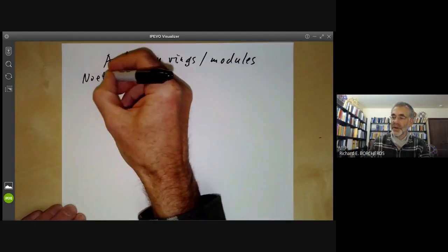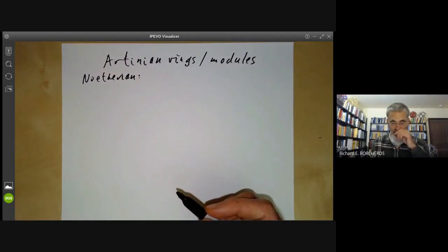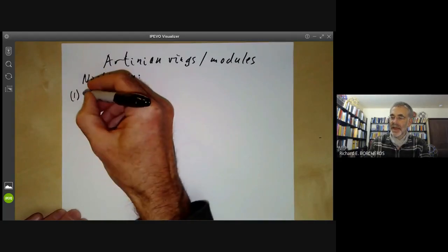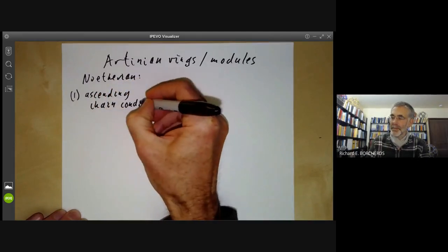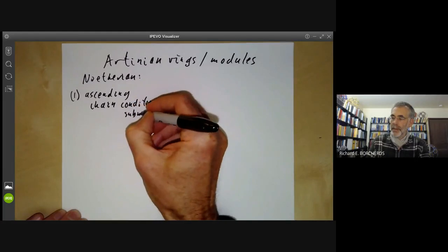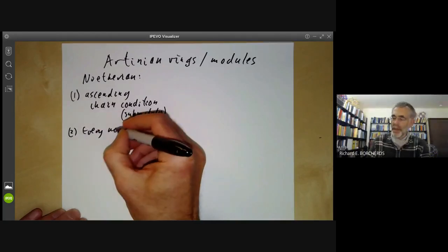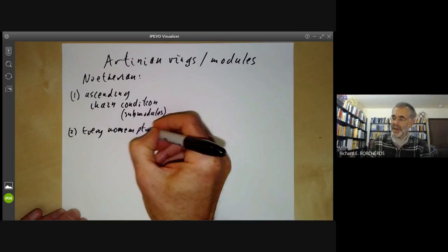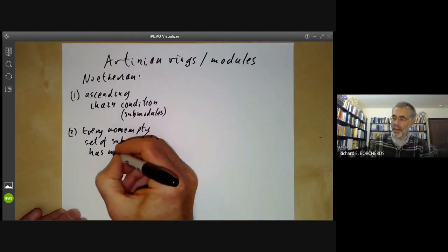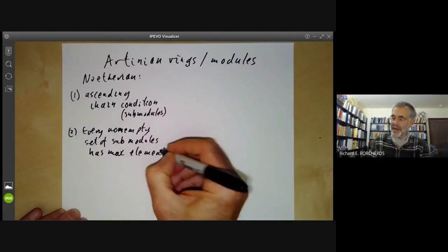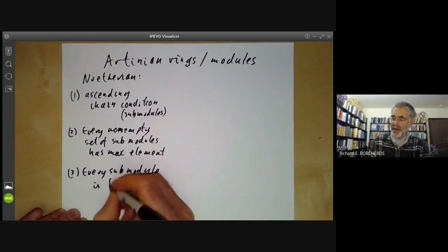Let's first recall the definition of Noetherian modules. There are three conditions that characterize Noetherian modules. The first is they satisfy the ascending chain condition for submodules. Or secondly, every non-empty set of submodules has a maximal element. And the third condition is that every submodule is finitely generated.